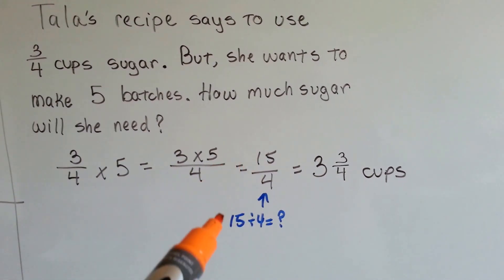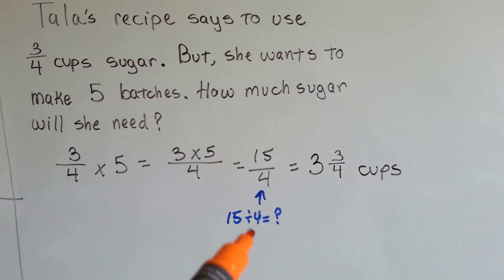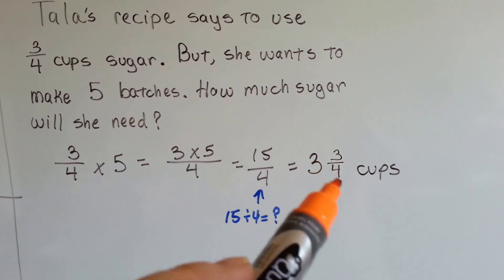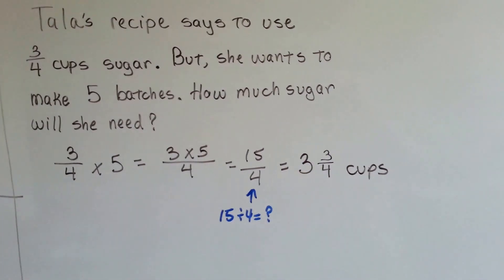How many 4's fit into 15? 3! With 3 left over. So 3 fourths left over. So it's 3 and 3 fourths cups.